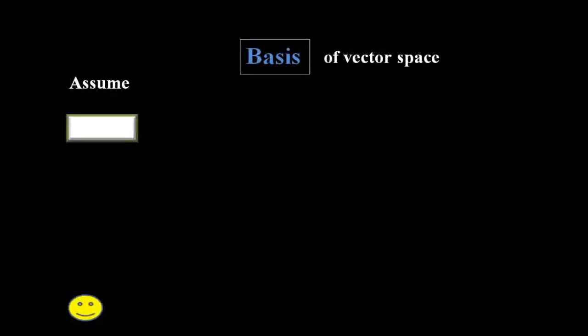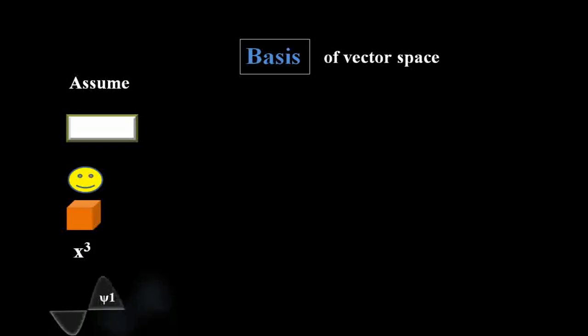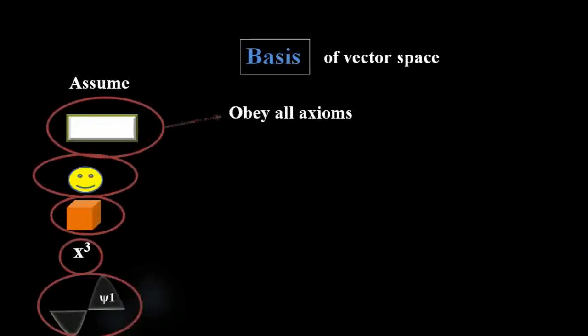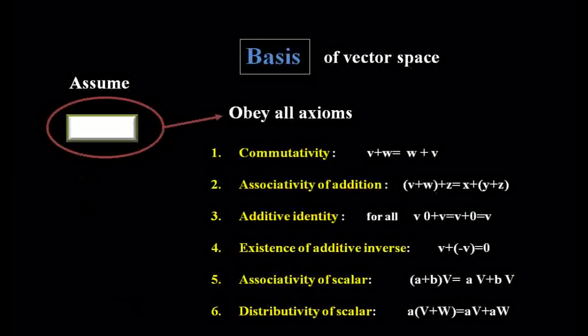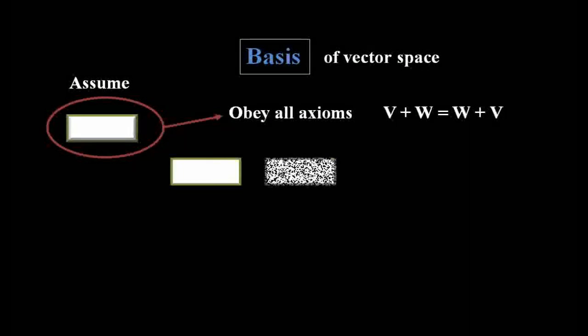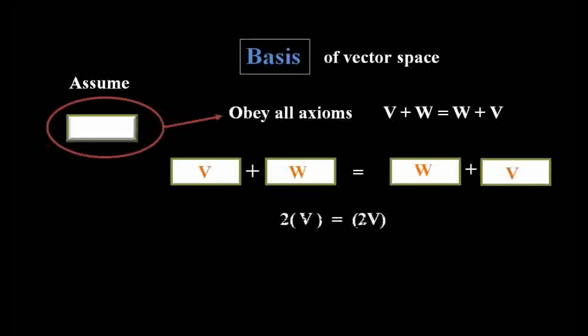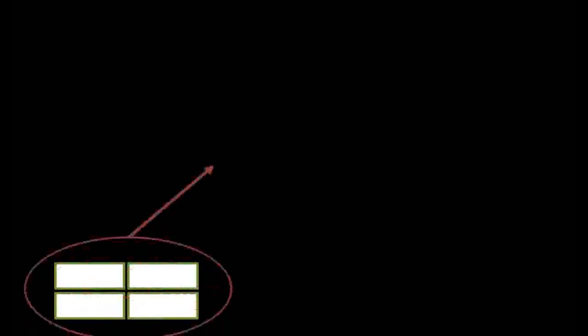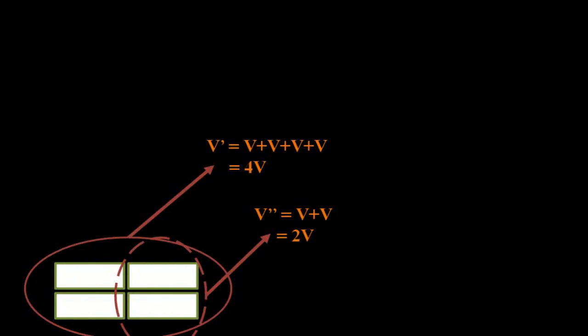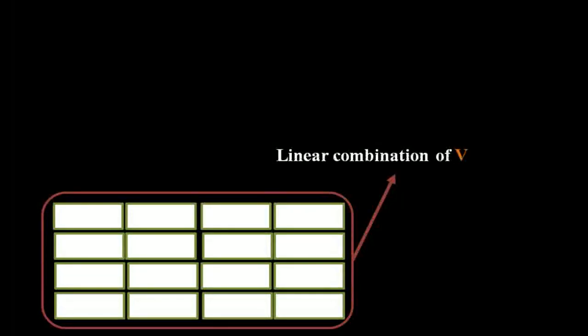The basis of vector space: we can consider a rectangle, a smiley face, a cube, a polynomial — anything, as long as these objects satisfy the vector axioms. Addition of a rectangle is commutative and scaling works just like vectors. A space formed by rectangles is a linear combination of four vectors or four rectangles, and their combinations span the whole space of all vector rectangles. Therefore, this rectangle is a basis for this space.